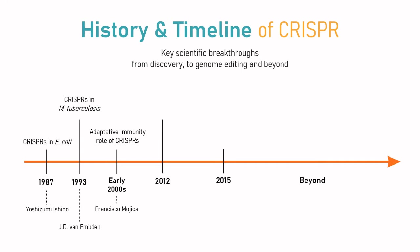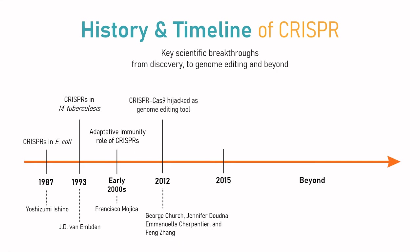In 2012, Church, Douna, Charpentier, and Zong hijacked CRISPR-Cas9 for genome editing, showing it can be used as a cut-and-paste tool to modify genomes. Three years after, Science named CRISPR as the breakthrough of the year in 2015. Finally, in the near future, CRISPR-Cas9 may also be used to cure genetic disorders by modifying the Cas9 nuclease to perform targeted epigenome editing.